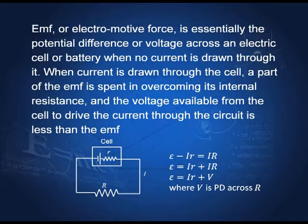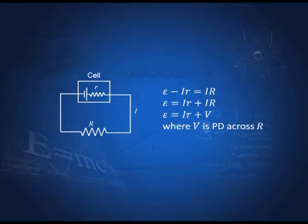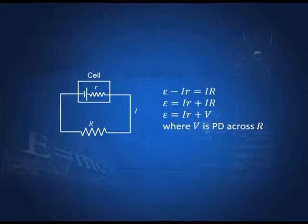EMF — its full name is electromotive force — is essentially the potential difference or voltage across an electric cell or battery when no current is drawn through it. If I do not draw any current and take the potential difference across the cell or battery, that would be the EMF of the cell or battery. If a current I is drawn, then some work is done in overcoming the internal resistance R of the cell, and therefore the potential difference across the cell is reduced by the amount IR. That is, E minus IR equals the voltage V across the resistor.